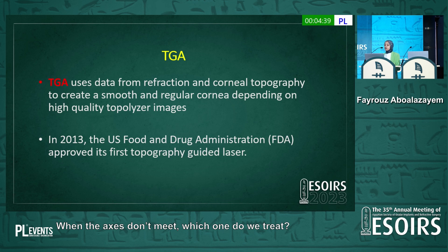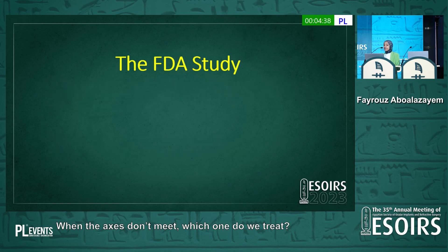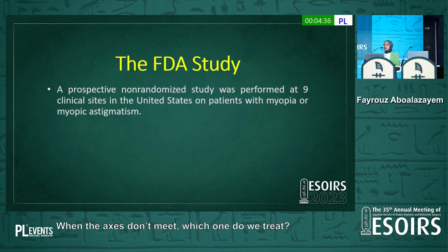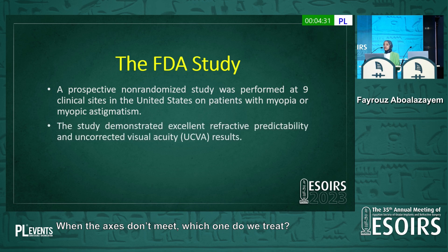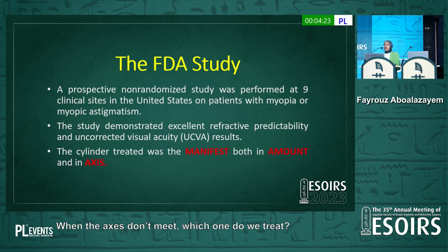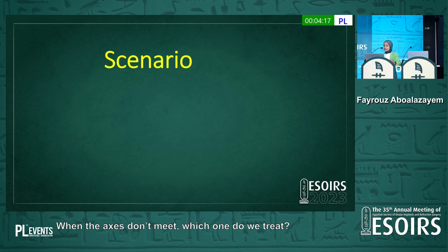It was FDA-approved in 2013. The FDA study, which was a prospective non-randomized study performed in nine centers, found that there is excellent refractive predictability and uncorrected visual acuity after Contura. The cylinder they treated was the manifest refraction in both amount and axis.